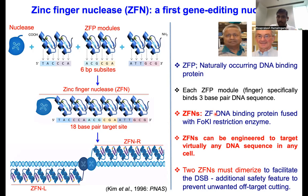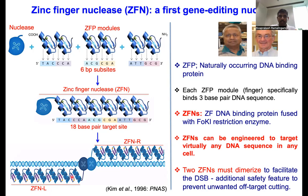Zinc finger nucleases can be engineered to target virtually any DNA sequence in any cell. You need two zinc finger nucleases because FOK1 must dimerize to make the double-strand break. To achieve this, you need a left zinc finger and a right zinc finger. For example, if you want to target the HBB gene, you can take five zinc finger left modules and five zinc finger right modules — each module targets 15 base pairs on each side, giving a 30 base-pair stretch that will not be present anywhere else in the genome, ensuring high specificity. Once you deliver both zinc finger nucleases into the cell, the modules bind at the target locus, FOK1 dimerizes, and it makes a targeted double-strand break.